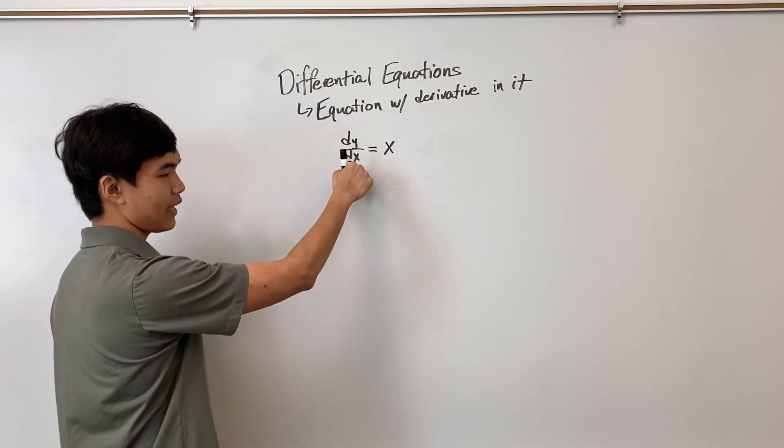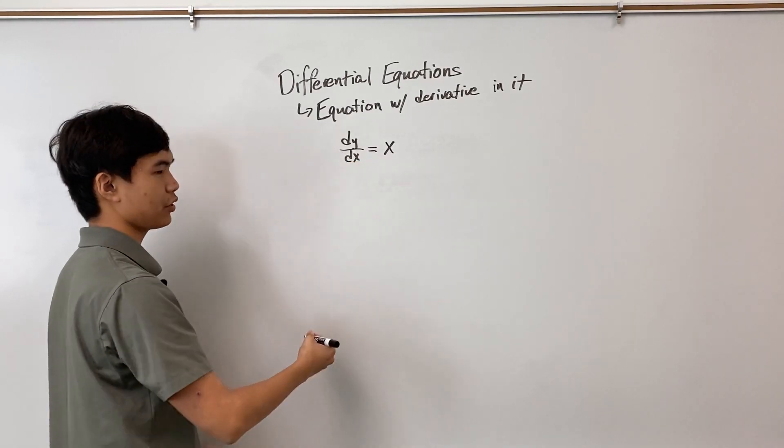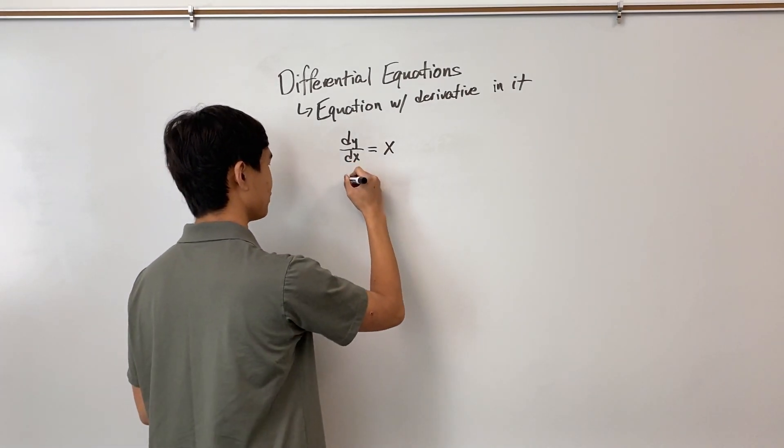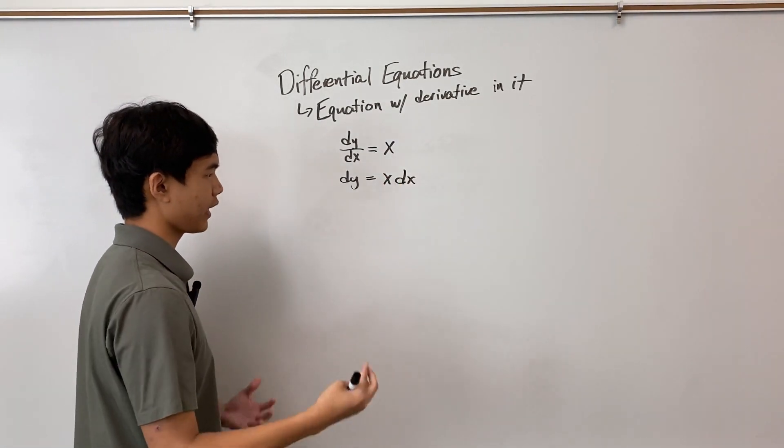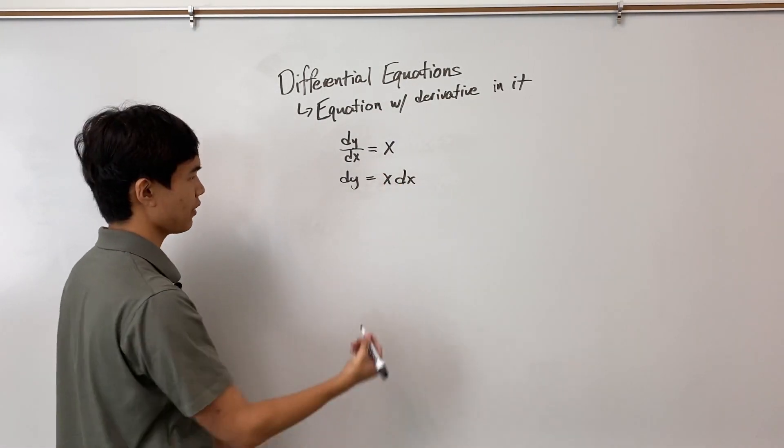So I want to get this dx onto the other side. So what I'm going to do is multiply both sides by dx. But now we have dy's and dx's that we can't get rid of. So what do we do? We have to integrate.